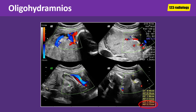This is a case of oligohydramnios. As you can see on this image, the amniotic fluid index is about 3.7 centimeters, indicating oligohydramnios. The normal amniotic fluid index is between 5 to 24 centimeters.